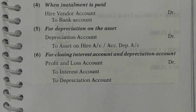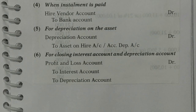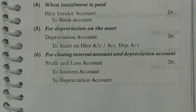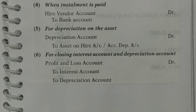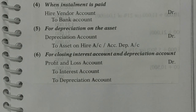The fourth entry is when the installment is paid. Credit what goes out — your bank balance is reducing. So we will do: to bank account and debit the receiver. Here the hire vendor is the receiver, and also a creditor. By the amount of the installment being paid to him, his balance as our creditor will be reduced. That is why we debit him.